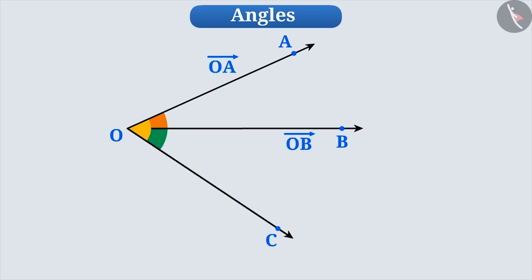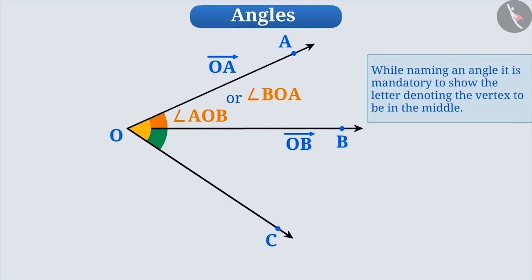For example, we will name the angle formed between ray OA and ray OB as angle AOB. Or, we can name it as angle BOA also. While naming any angle, it is important to indicate the name of the vertex in the middle. Just like angle AOB, we will name the angle between ray OB and ray OC as angle BOC or angle COB.